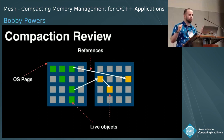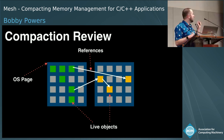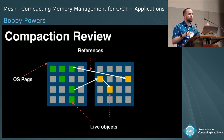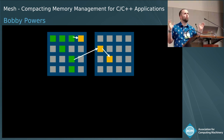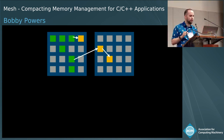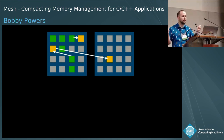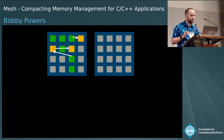Let's review what this compaction looks like. We have operating system pages, we have live objects on these pages, and then we have references between objects. When a runtime wants to reclaim memory, it moves objects closer together, and then it updates every single reference to these moved objects.